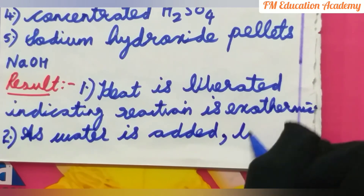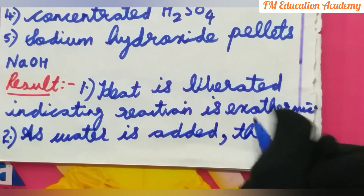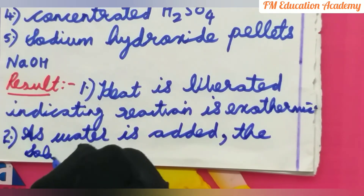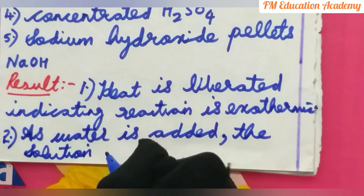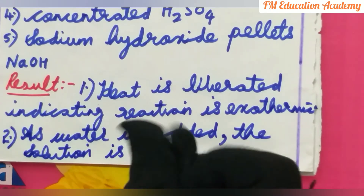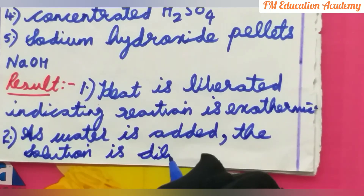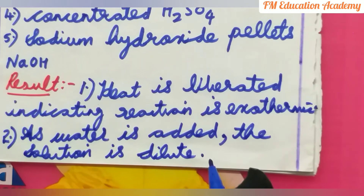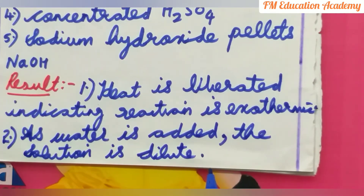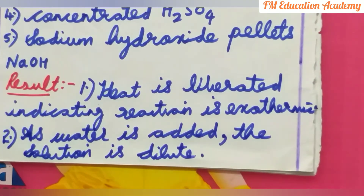Diluted means we are adding water so as to decrease the concentration of H⁺ ions in the solution. These are the two results we got when we mixed concentrated H₂SO₄ with water.